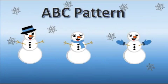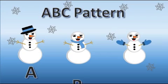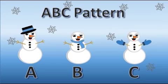We need three pictures for the ABC pattern. The letter A is for the snowman with a hat. The letter B is for the snowman with a scarf. The letter C is for the snowman with mittens. It is time to start this ABC pattern. Where are my helpers?